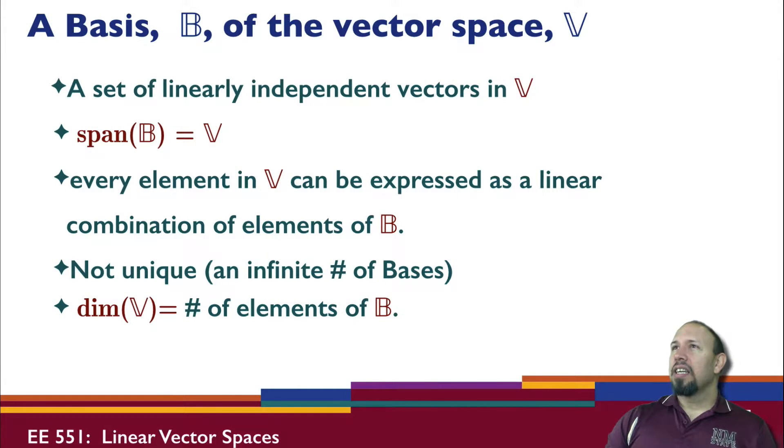A basis B of the vector space V is a set of linearly independent vectors in V. The vector space is this space, and a basis is making it concrete - that is, picking as many independent vectors as there are in this vector space. The span of the set of vectors is equal to the vector space.